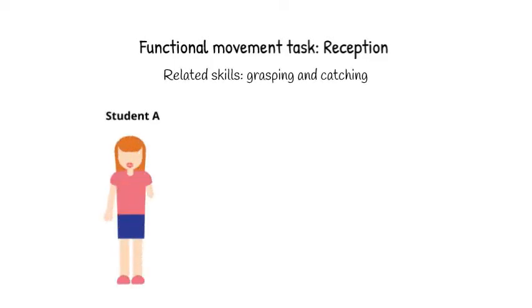Student A, who has an amputation on one arm above the elbow, may use both arms including the partial limb, and with a wide base, she may position herself using her body more in the catch.